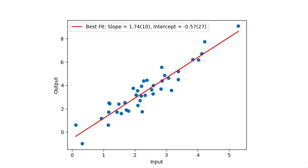The next thing we should do is add labels and, if necessary, a legend. Put some useful information in the legend — this is usually things like correlation coefficients, fit parameters, or quality metrics.